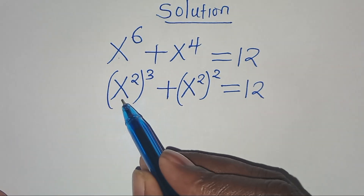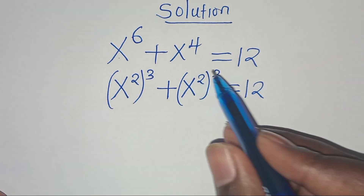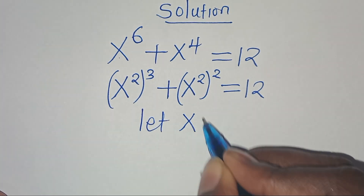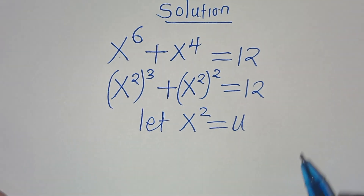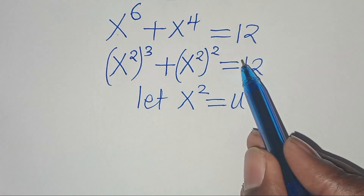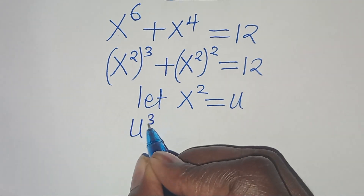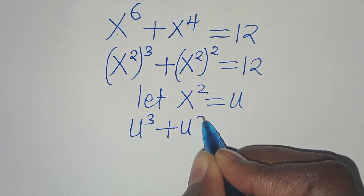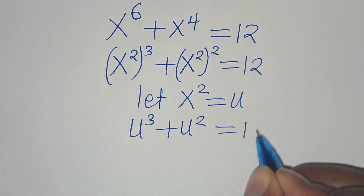We have x² appearing in both terms, so we let x² equal u and substitute u into this equation. We get u to the power of 3 plus u to the power of 2.